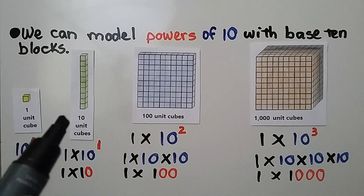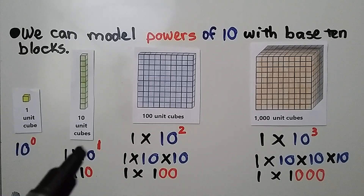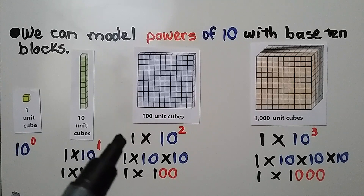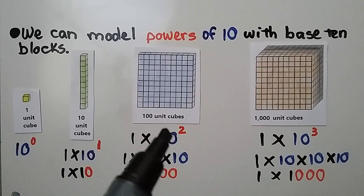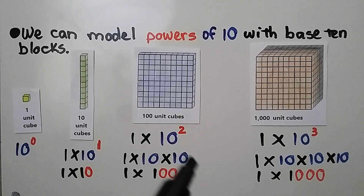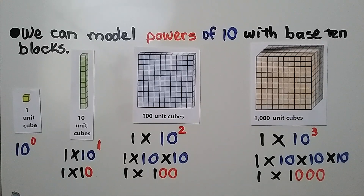Here we have 10 unit cubes — that would be 1 times 10 to the first power, which is 1 times 10. Here we have 100 cubes — that's 1 times 10 to the second power, or 1 times 10 times 10. We have two factors of 10, so there's a little 2 exponent. Here we have a thousand unit cubes — that's 1 times 10 to the third power, which is 1 times 10 times 10 times 10, or 1 times 1,000.